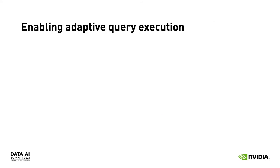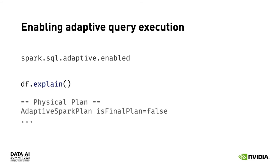Turning on adaptive query execution is very easy. There are some parameters to tune, but you can get a lot of benefits just with the defaults, which you get by setting spark.sql.adaptive.enabled to true in your Spark configuration. Once enabled, you'll see in your query plans — whether inspecting manually, in a Spark event log, or in the Spark history server — a node called adaptive spark plan, confirming that you're running with adaptive query execution.